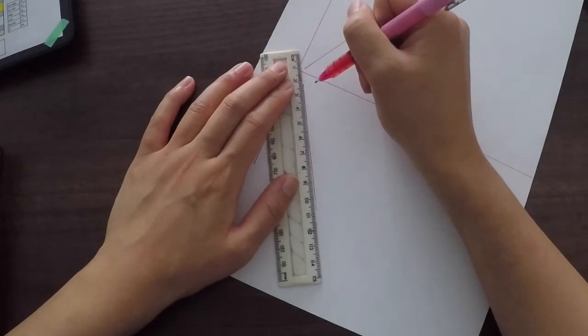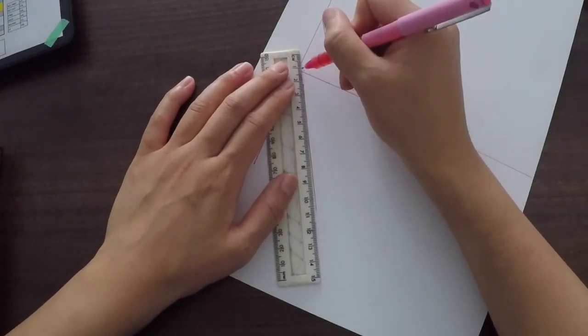And if you miss out any points obviously you just need to use your ruler and join that up like so.